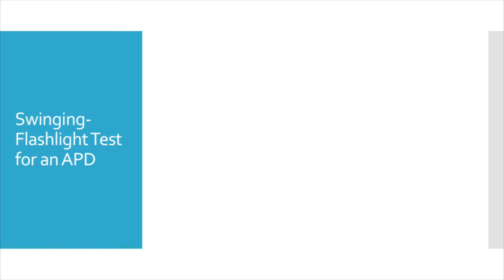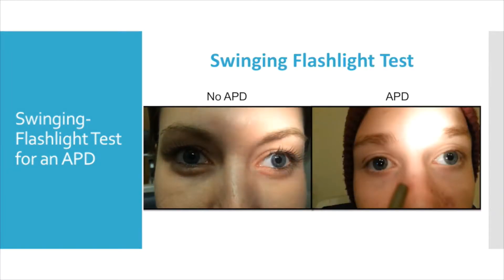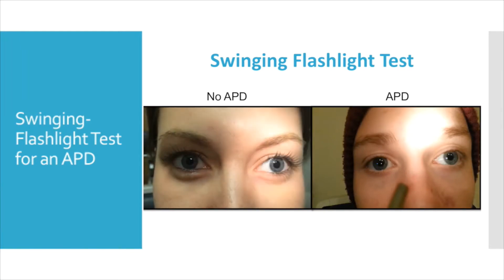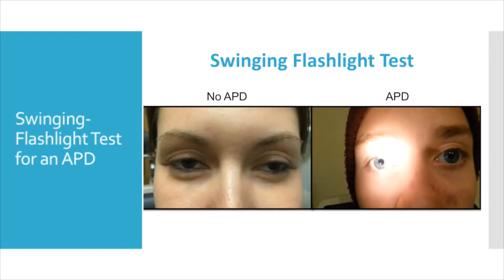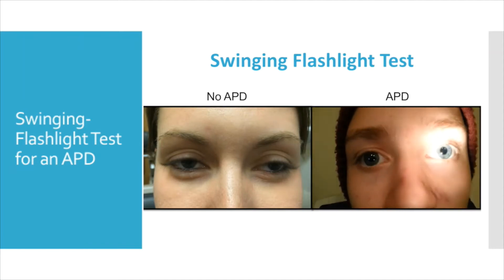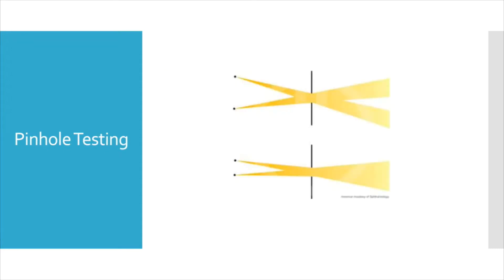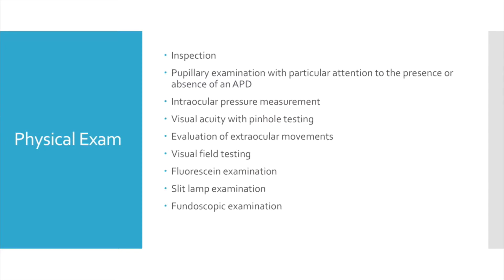The video that follows shows a normal subject without an afferent pupillary defect, and then a subject who does have an afferent pupillary defect. Other important parts of the physical exam include intraocular pressure measurement and visual acuity testing, particularly with pinhole testing. Pinhole testing helps evaluate whether the pathology causing the acute visual loss is in the anterior chamber or on the ocular surface versus in the retina. Other important physical exam tests include evaluation of extraocular movements, visual field testing, fluorescein examination, slit lamp examination, and fundoscopic exam.